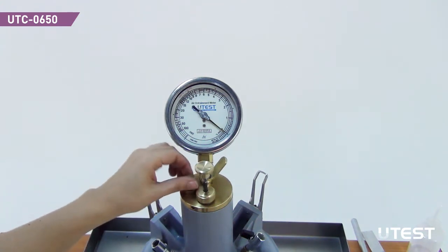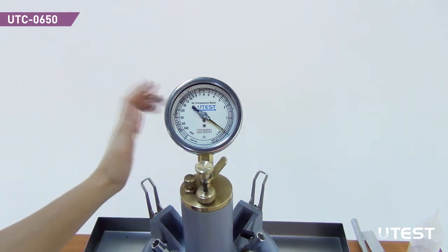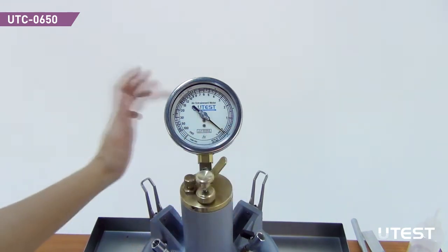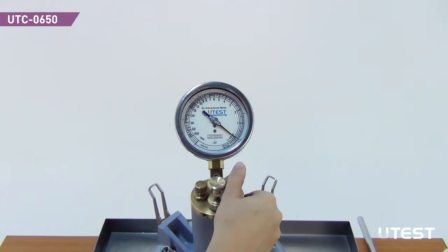If it does not show the initial pressure line after tapping, stabilize the gauge hand at the initial pressure line by pumping or bleeding of air. Press the main air valve latch.